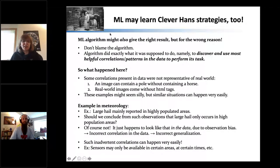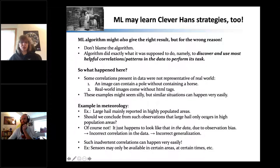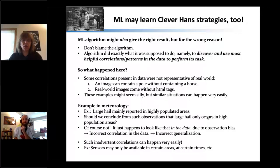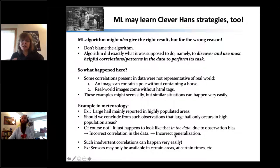The neural network did exactly what it was supposed to do: discover and use the most helpful correlations and patterns in the data to perform the task. Some correlations were present in the data but not representative of the real world — an image can contain a pole without a horse, and real-world images don't have HTML tags. Similar situations happen easily in meteorology. For example, large hail is mainly reported in highly populated areas, not because it only occurs there, but due to observation bias.